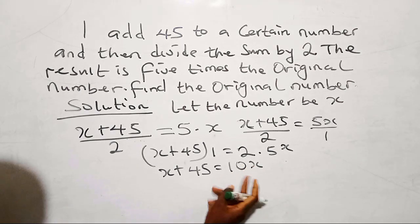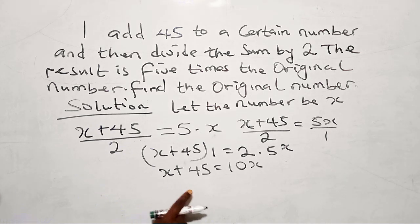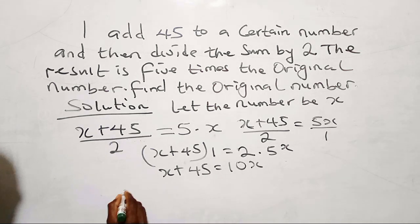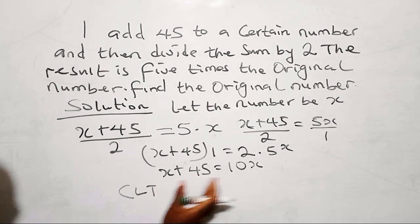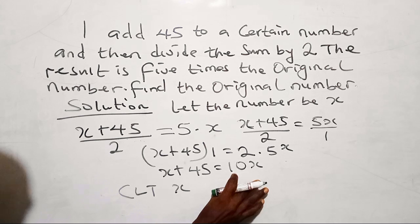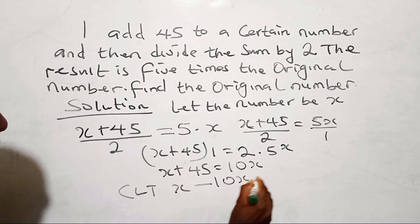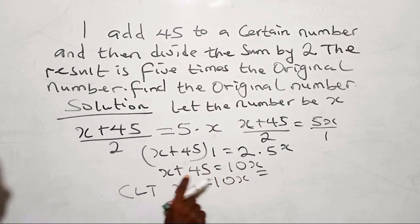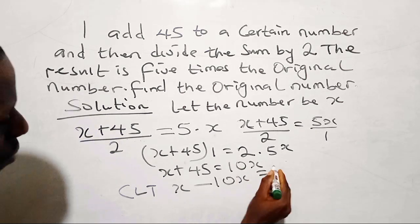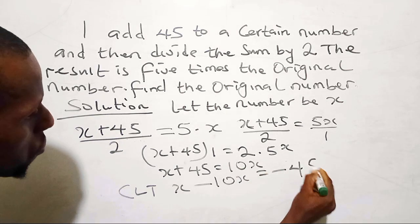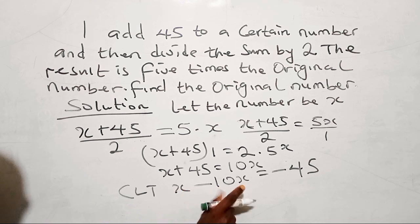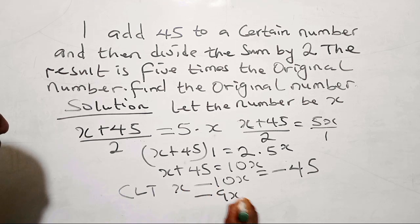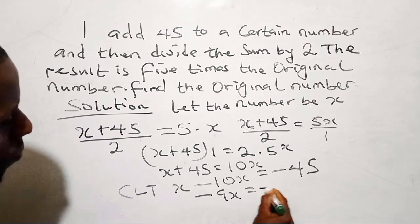So since you have set up an equation, you can collect the like terms. When you collect the like terms, bring the variables together. So here you have x. I can easily bring this back here, minus 10x equals, and take this to be minus 45. So when you solve for that, you have x minus 10x is minus 9x equals minus 45.